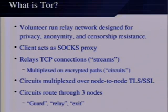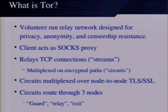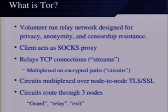So what is Tor? A quick overview. You run the Tor client, which acts as a SOCKS proxy that you connect your applications to. When your applications connect to the SOCKS proxy, they're translated into what Tor calls streams. These streams are multiplexed on top of encrypted paths called circuits, which are in turn multiplexed over TLS/SSL connections between individual relay nodes run by volunteers worldwide. These paths consist of three nodes: the guard node, the relay or middle node, and the exit. Nodes are chosen probabilistically proportional to their bandwidth.